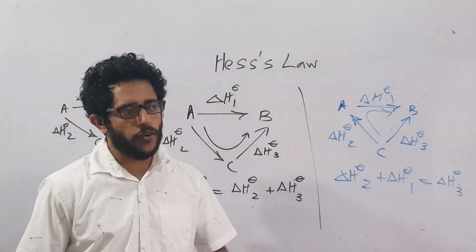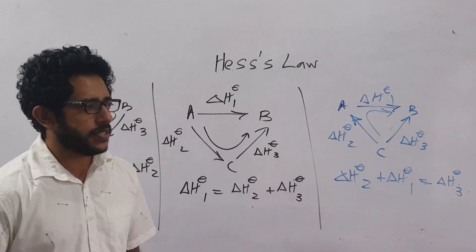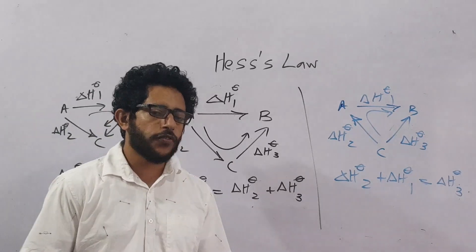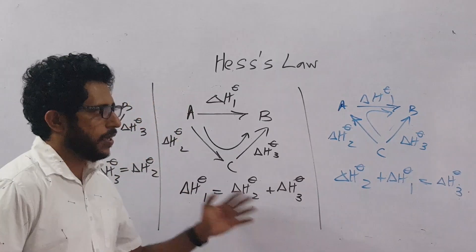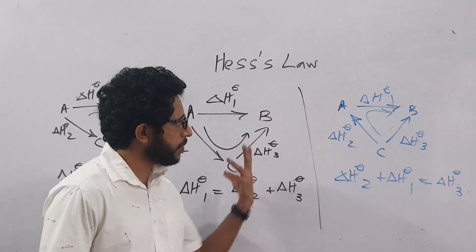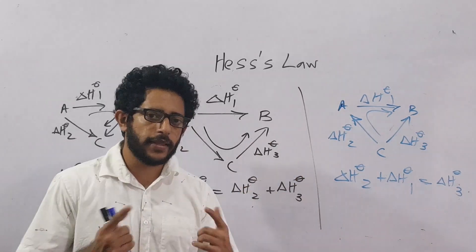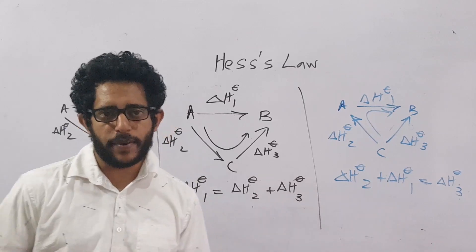Those three or four enthalpy definitions are used to construct the Hess cycles, and those Hess cycles are then used to find the enthalpy change of a chemical reaction. This is what Hess suggested. We'll see how we can use this concept, the Hess's law, to find the enthalpy change of a chemical reaction using the standard enthalpy definitions.